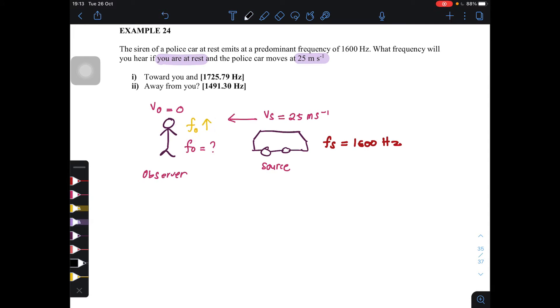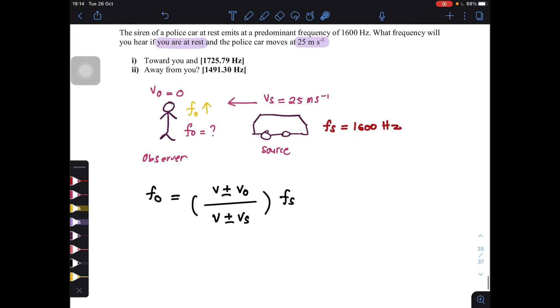The general formula for Doppler effect: f_o is equal to V plus minus V_o divided by V plus minus V_s times f_s. So in this situation, we have V_o is equal to zero.